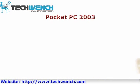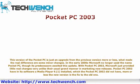Pocket PC 2003 is just an upgrade from the previous version more or less, but made a real difference with some minor changes. In the early 2000s, Microsoft no longer used the name Pocket PC, though its predecessors awaited this update. With Pocket PC 2003, Microsoft provided little real changes, very unlike their usual grand manner in marketing new releases. More or less, the new version is a fix to the old one.